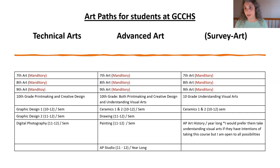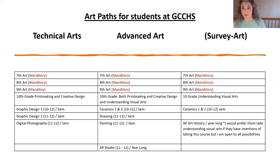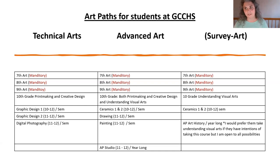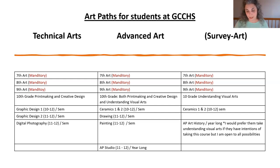In our technical arts program we have graphic design, digital photography, printmaking, and creative design. In advanced arts we have AP art and design, painting, drawing, and ceramics one and two. When I first came in, it was just art one through four. How can you do a comprehensive program if you're not teaching a full semester of ceramics or drawing? This was a gradual process — the first year I told my administrator I'd like to replace art two with drawing and painting, and each year I'd write new course descriptions. We've built the program up over the years.